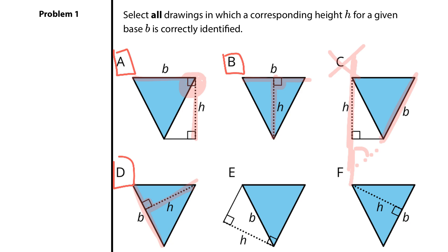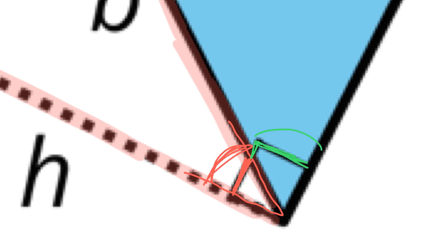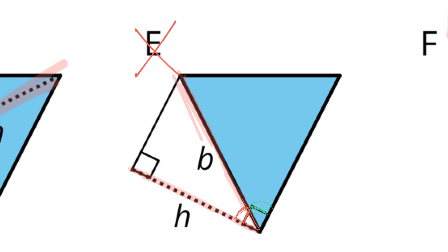I want to look real close at E, because this is one where I can imagine getting a little bit confused. Here's our base B, here's our height labeled H, and I see all these right angles — so obviously it has to be a solution, right? No, it's not, and here's why. If I zoom way in on this base and the height, the angle that these meet is only taking up part of the right angle. This part is not included, so the base and height actually do not meet at a right angle, and E is not a solution.